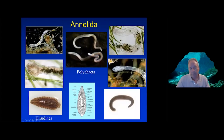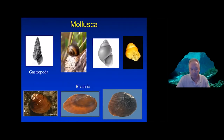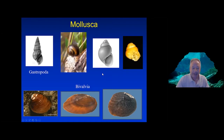Going briefly through the major taxonomic categories of benthic macroinvertebrates examined by ecologists assessing the health of these systems: beginning with the annelids — commonly thought of as worms — we have multi-segmented polychaetes, leeches, and the Hirudinea, which are very diverse. We have two major categories of mollusks: the gastropods (snails) shown at the top and the bivalves (mussels) shown at the bottom. Many of our gastropods are important grazers on periphyton and epilithic organisms. The bivalves are filter feeders.